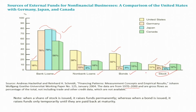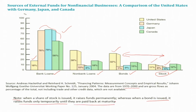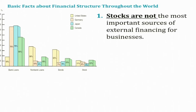An important note: we shouldn't make a direct comparison between bond share and stock share, because when a share of stock is issued it raises funds permanently, whereas when a bond is issued it raises funds only temporarily until they are paid back. So a direct interpretation of this figure may be misleading. With that in mind, let us discuss the major inferences and insights from this figure.